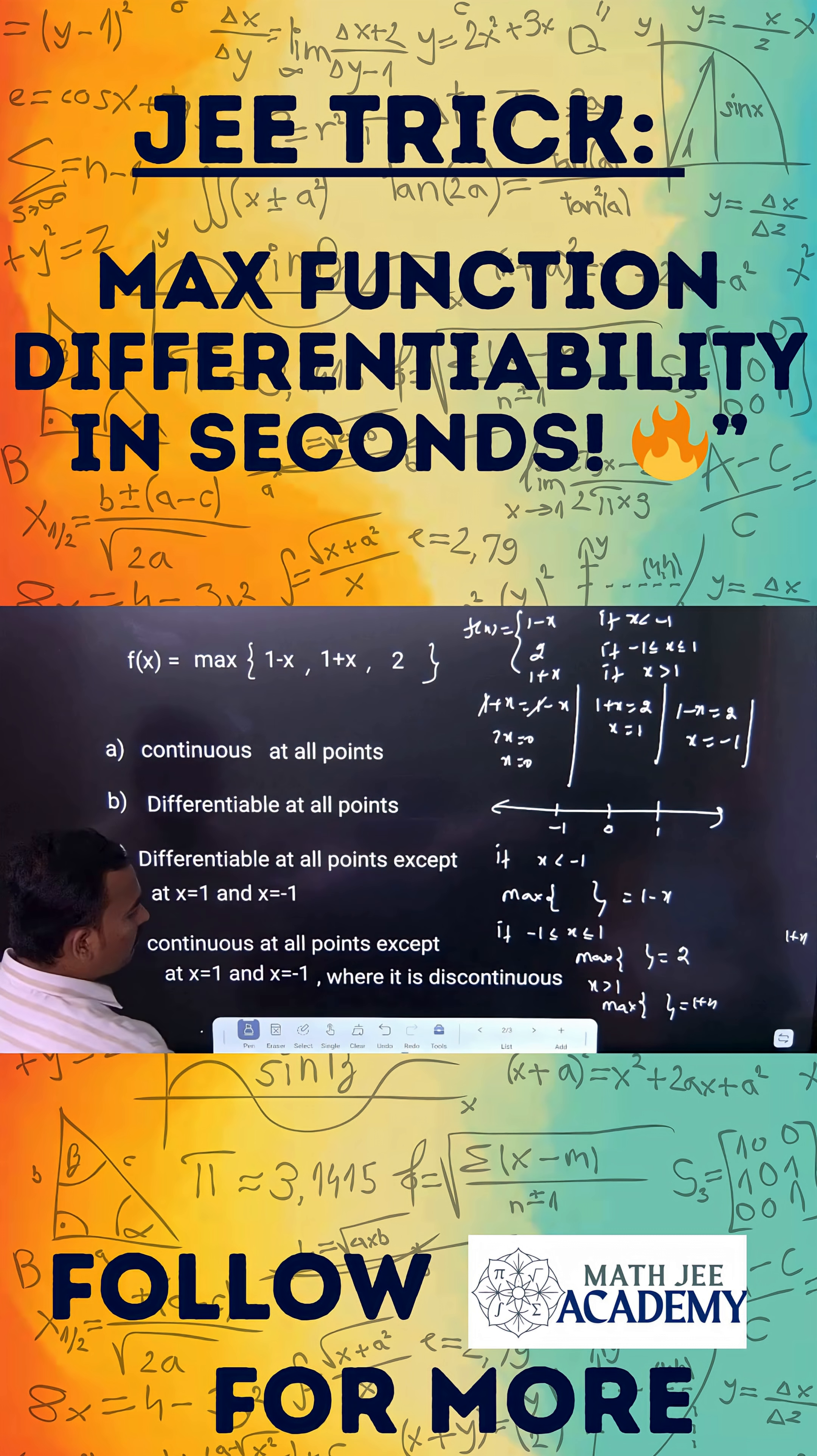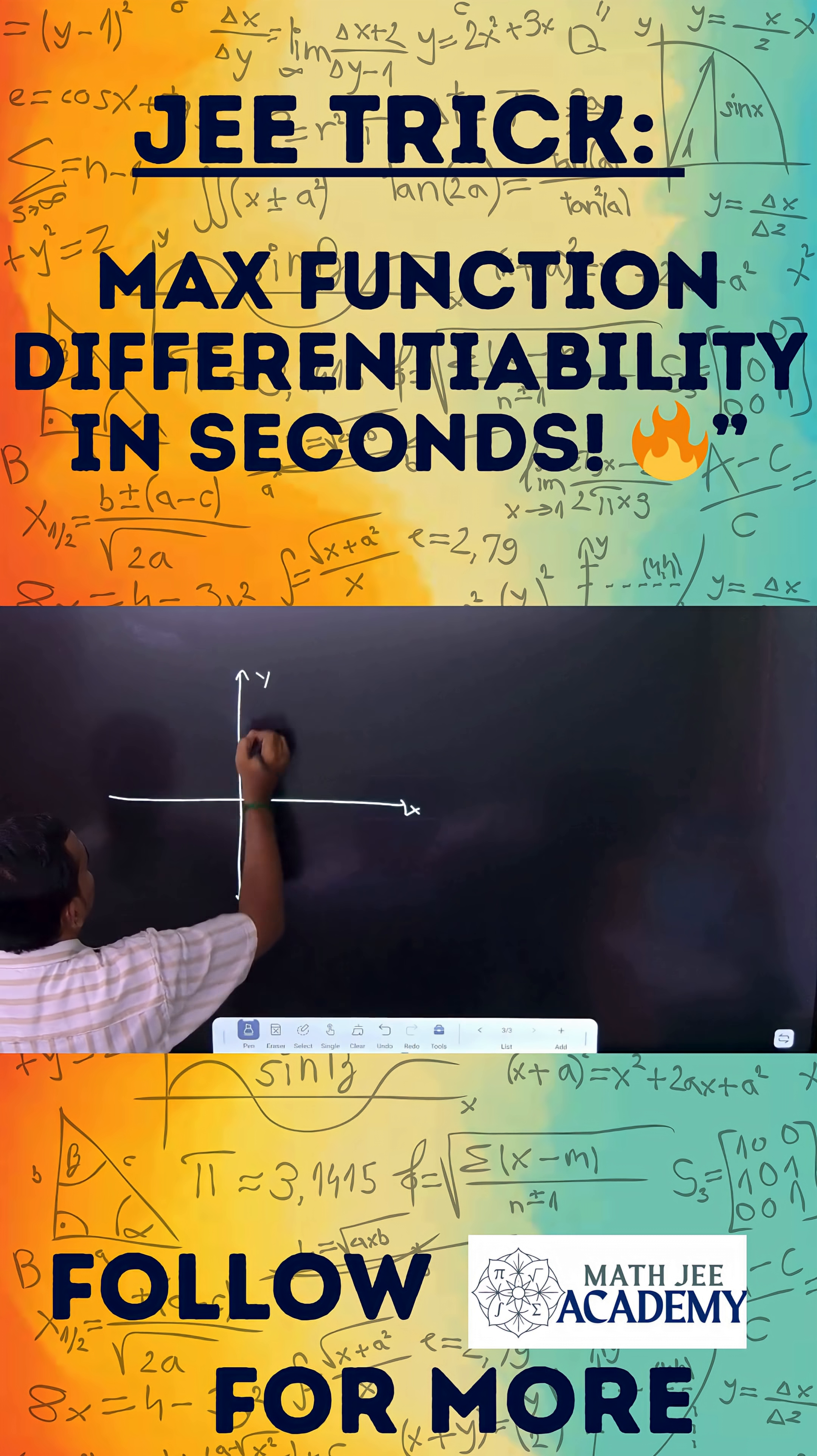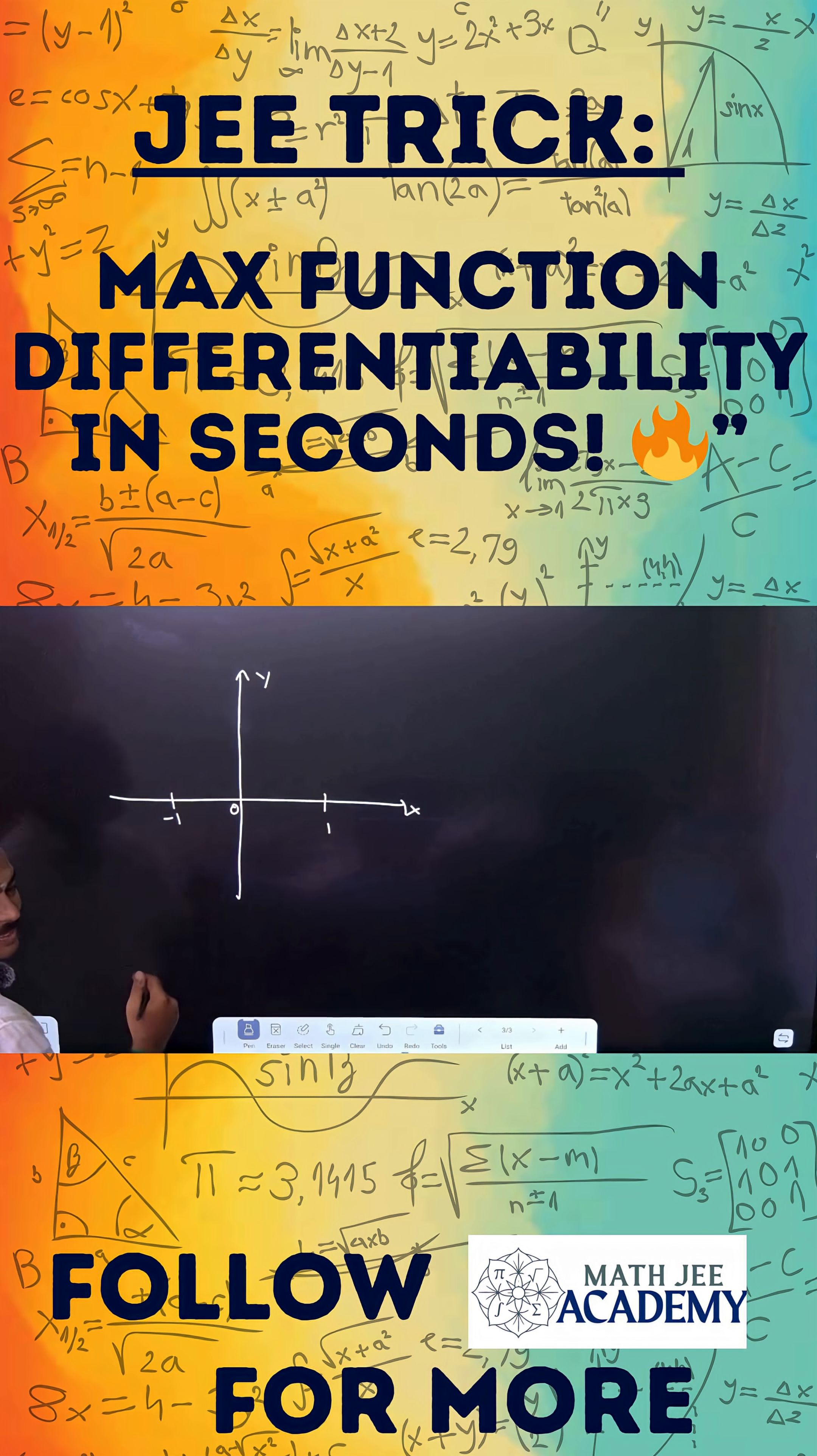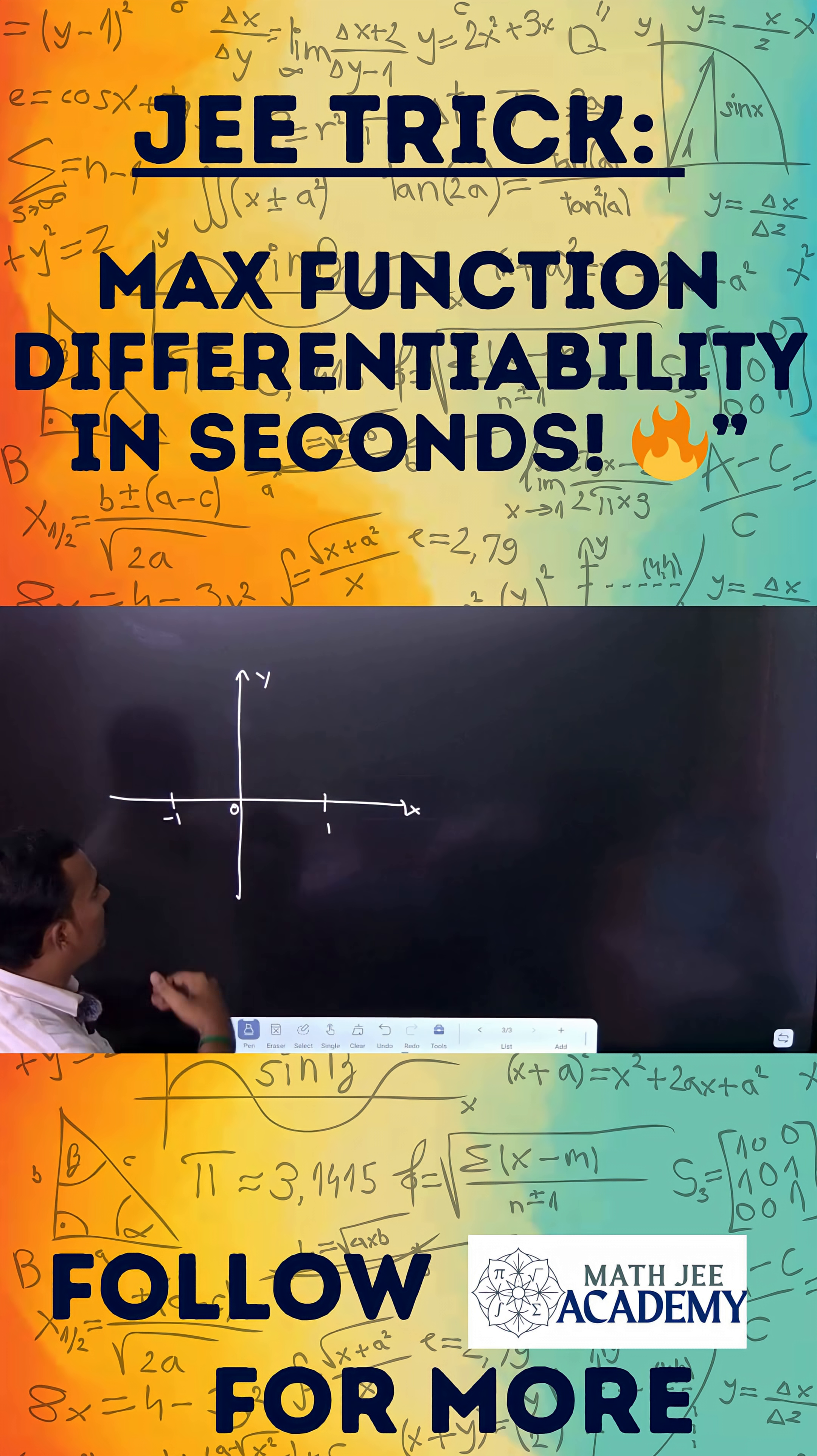Then how to draw the graph of this? You can see here, this is your x axis, this is y axis minus 1, 0 and 1. If minus x plus 1, it is negative slope, you know, you shift 1 unit up.